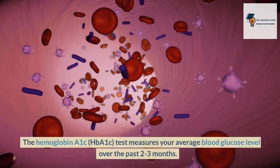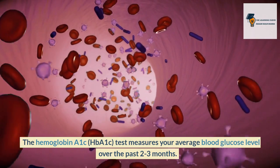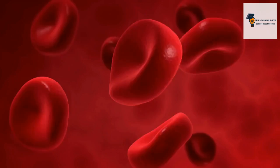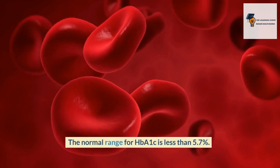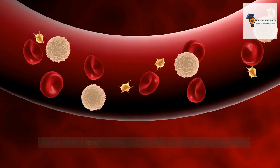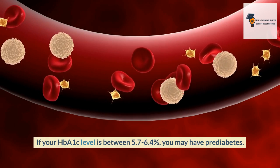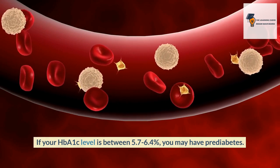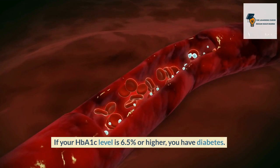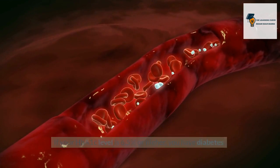The Hemoglobin A1c (HbA1c) Test measures your average blood glucose level over the past 2–3 months. The normal range for HbA1c is less than 5.7%. If your HbA1c level is between 5.7% and 6.4%, you may have prediabetes. If your HbA1c level is 6.5% or higher, you have diabetes.